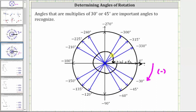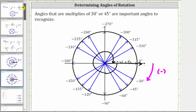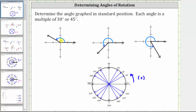Let's go back to our examples. Looking at the first three examples, because the rotation indicated by the arrow is counterclockwise, these three angles are positive. For this first angle, the initial side is along the positive x-axis and the terminal side is in the second quadrant. Because the rotation is counterclockwise, the angle is positive. So we have 30 degrees, 45 degrees, 60 degrees, 90 degrees — we need to rotate another 60 degrees. 90 plus 60 is equal to 150 degrees.